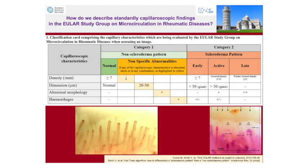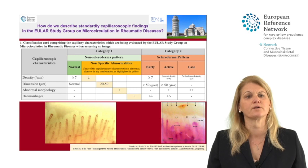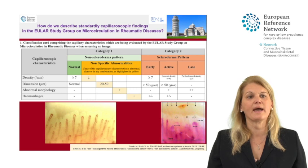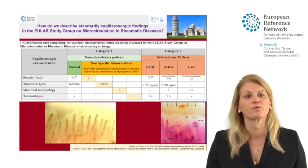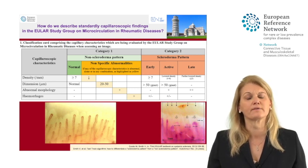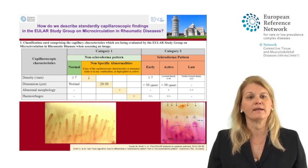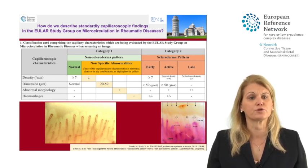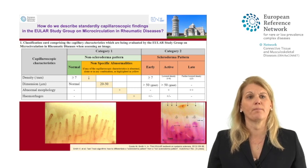There are a lot of characteristics that can be described when looking at a capillaroscopic image, and hence different schools have used different terminologies, which sometimes cause a Babylonic language barrier in interpretation between studies. Hence, with the EULAR study group on microcirculation and rheumatic diseases, a consensus has been formed about what characteristics to standardly evaluate throughout all rheumatic and autoimmune diseases. This standard interpretation will facilitate future comparison between published studies.